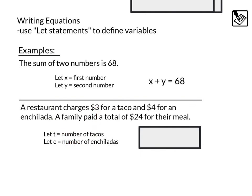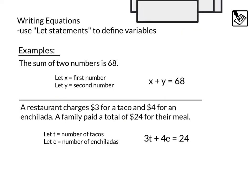Then we can set up our equation. $3 per taco. That's going to be 3T. Plus $4 per enchilada. That's plus 4E. And that's going to equal the total cost, which was $24. And we've got our equation right there.